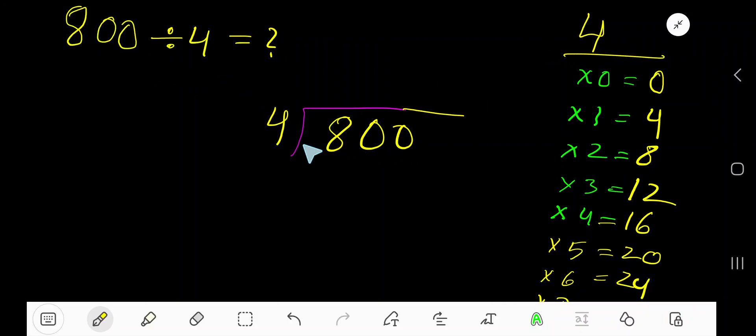800 divided by 4. Here 4 is a divisor. So we need multiplication table of 4.